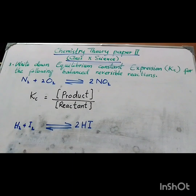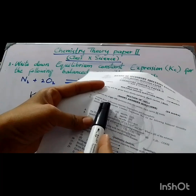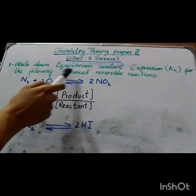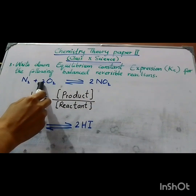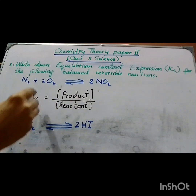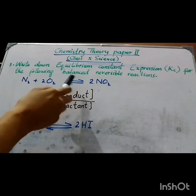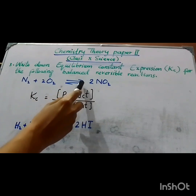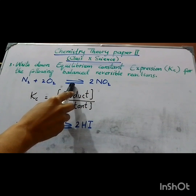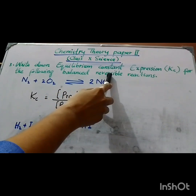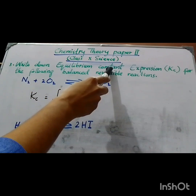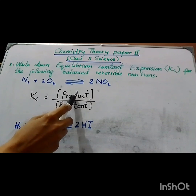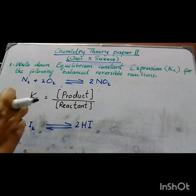Now, Question 3 from the model paper: write down the equilibrium constant expression for the following balanced reversible reactions. You have a balanced equation of a reversible reaction. Reversible reactions are represented with double-headed arrows in both directions. We have to write the equilibrium constant represented as Kc. The formula is: Kc = concentration of products divided by concentration of reactants.